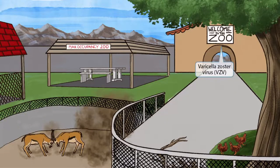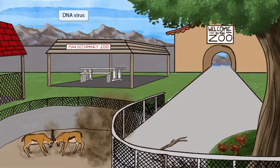This scene will take place inside of a zoo. Notice the animals on the prominent sign that says 'Welcome to the zoo.' Zoo sounds like zoster, which should help you remember that this image is all about VZV.